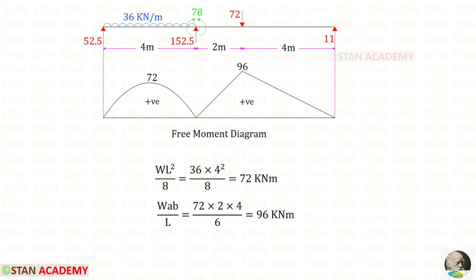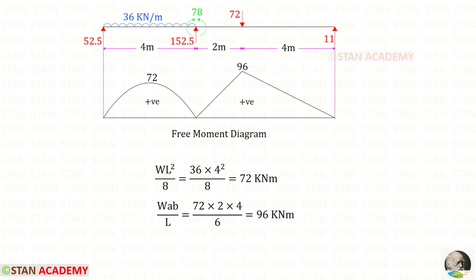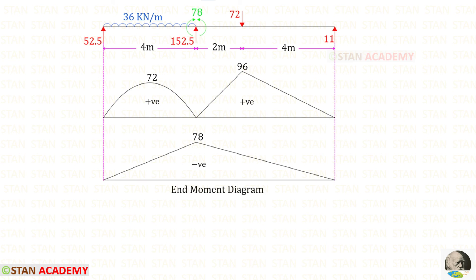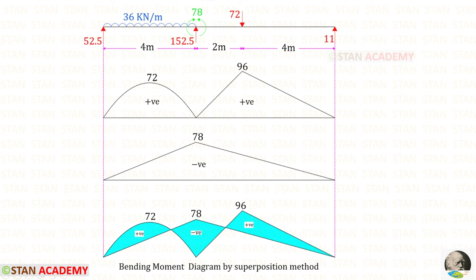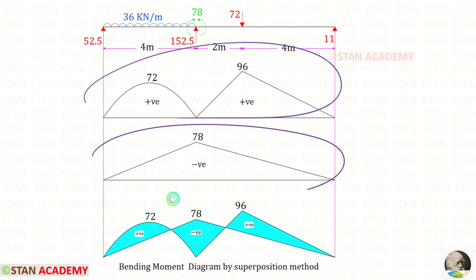Now we are going to draw the bending moment diagram using the superposition method. First we draw the free moment diagram, treating each span as a separate simply supported beam and using the standard formulas to find the moments. Then, using the moment at B, we draw the end moment diagram. Combining both diagrams gives us the final bending moment diagram by superposition.